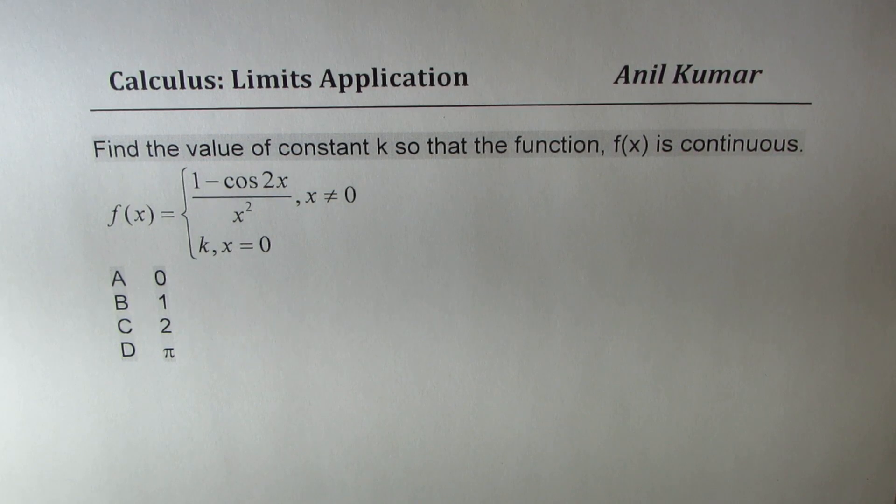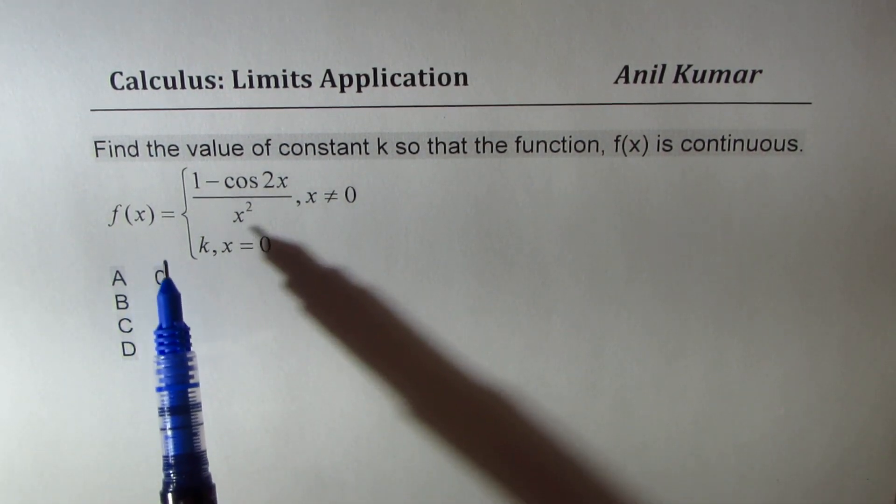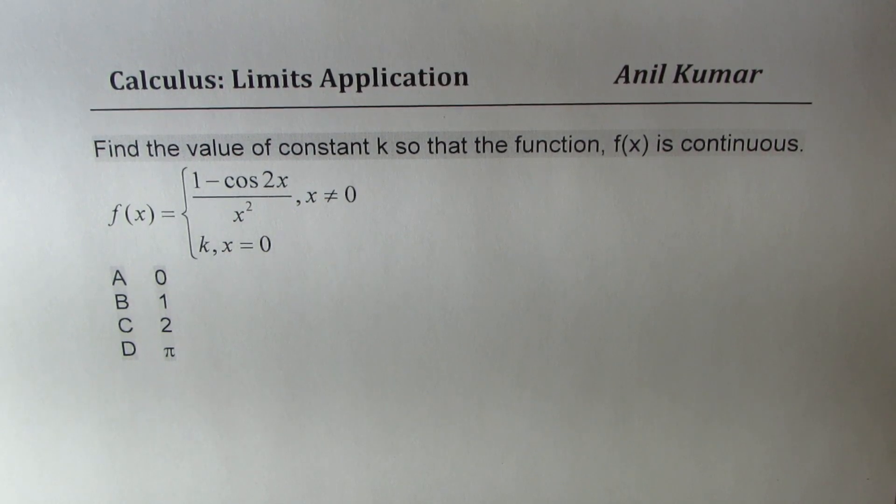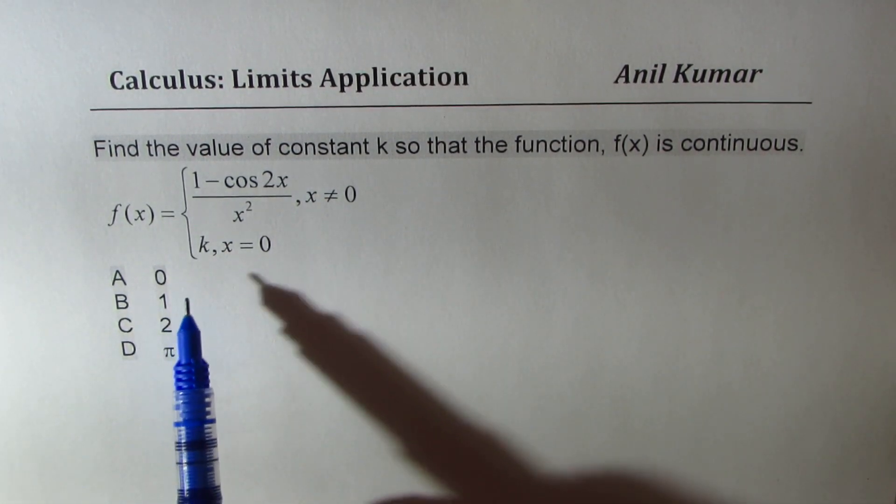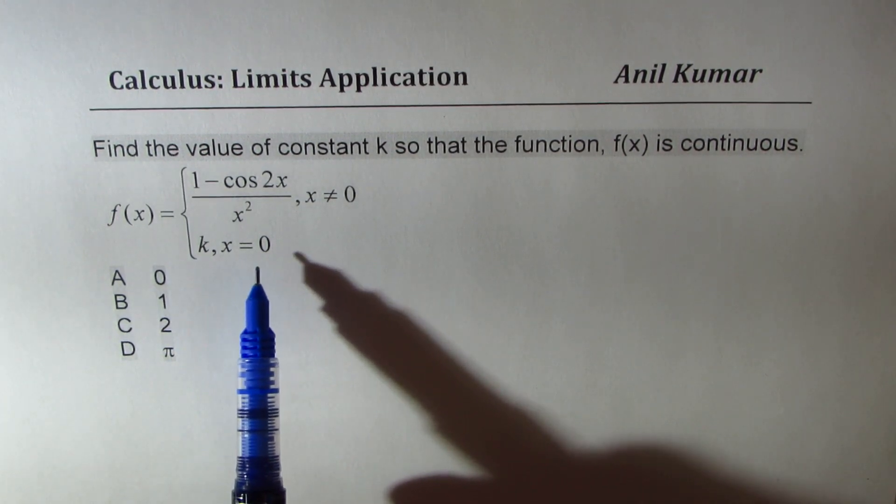The question here is find the value of constant k so that the function f(x) is continuous. f(x) equals 1 minus cos 2x divided by x squared where x is not equal to 0, and it is equal to k when x equals 0.